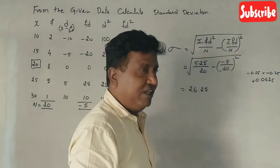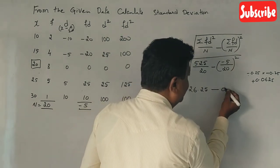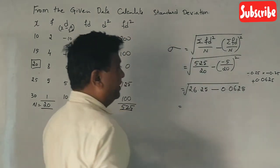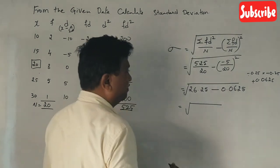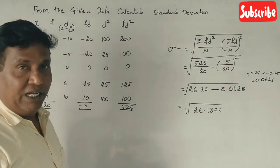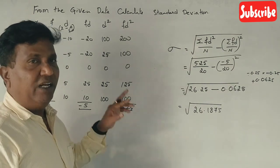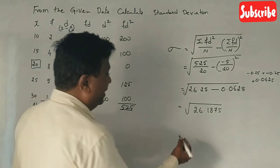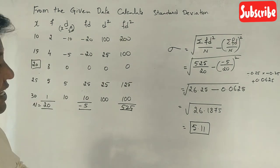So the result is 26.25 minus 0.0625, which equals approximately 26.1875. Taking the square root gives approximately 5.9. This is the answer — standard deviation equals 5.9.